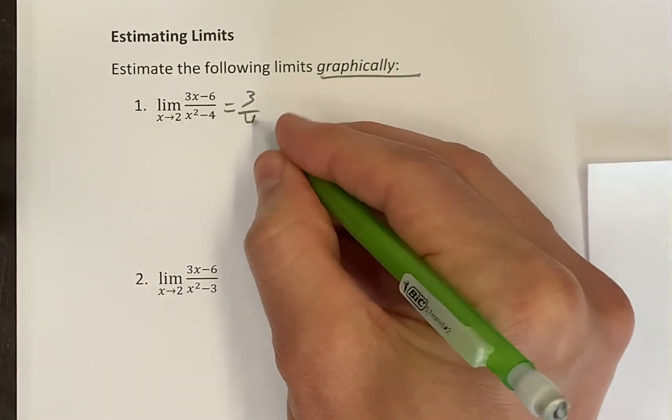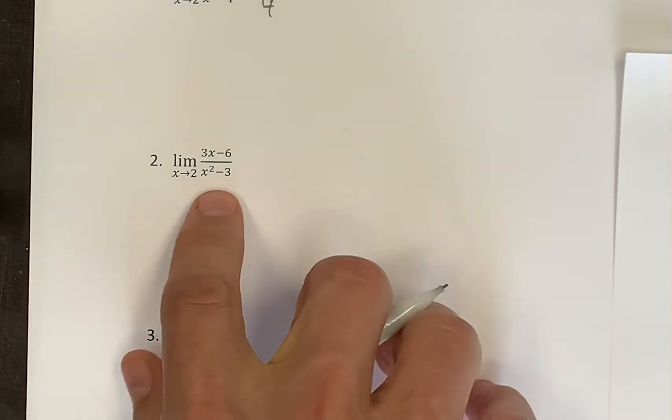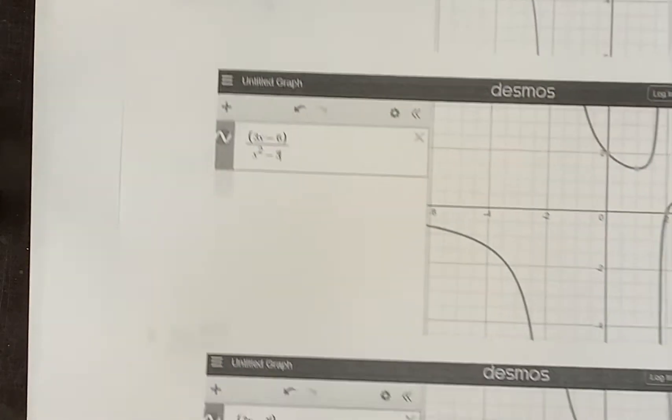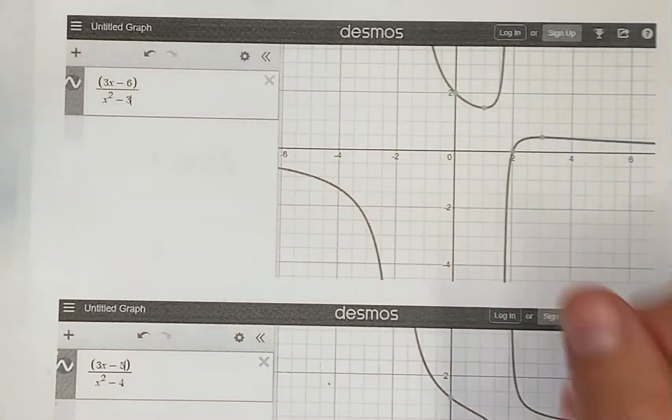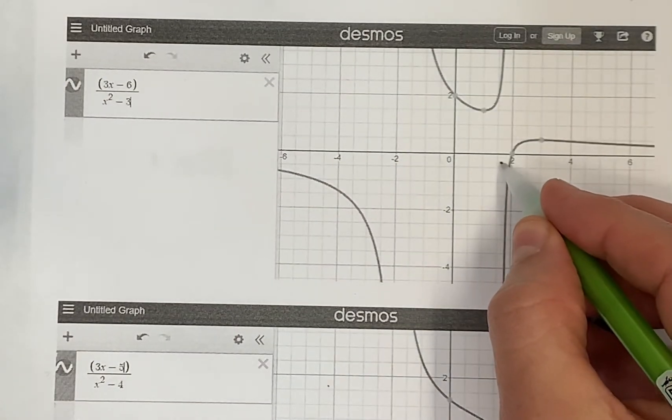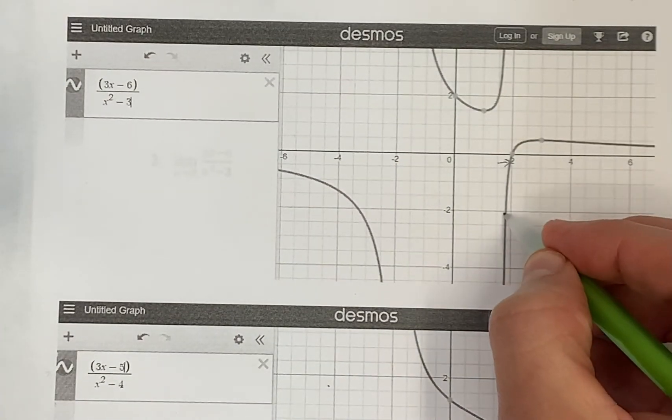Okay, what about this one? What happens as the input gets close to 2 there? Well, you could change that in the graph and notice what's happening as you come from the left. Well, you better not come too far from the left. You need to be near.